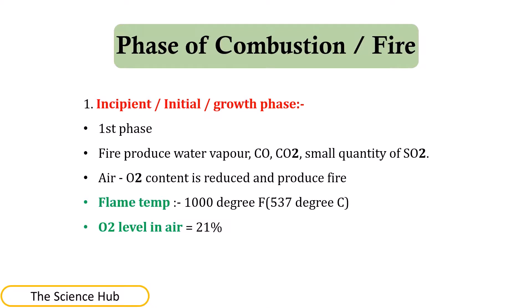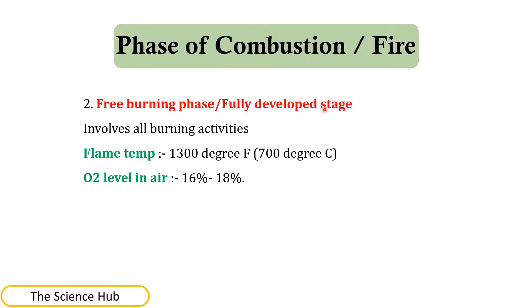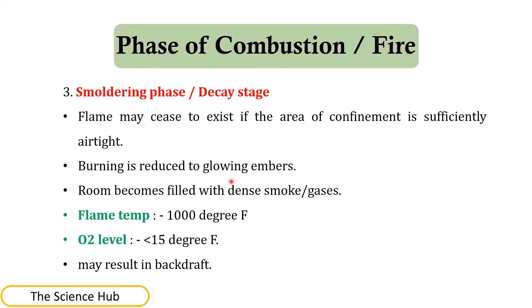The free burning phase, or fully developed stage, involves peak burning activity. The flame temperature is nearly 1,300°F (700°C), and oxygen level in air is approximately 16% to 18%. Then comes the smoldering phase, or decay stage, where the flame may cease to exist if the area is sufficiently airtight. Burning is reduced to glowing embers and the room becomes filled with dense smoke and gases. The flame temperature is nearly 1,000°F and oxygen level is less than 15%.